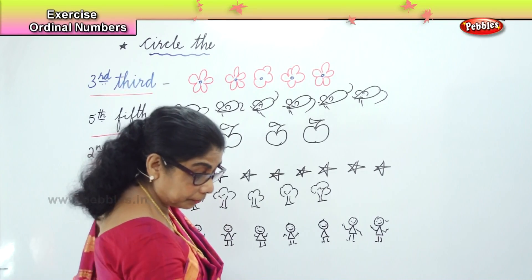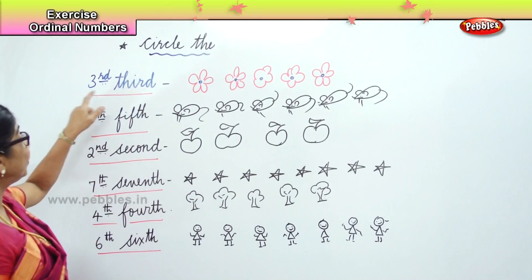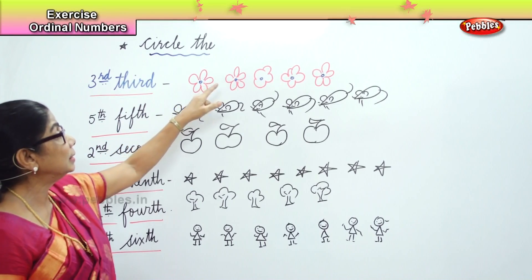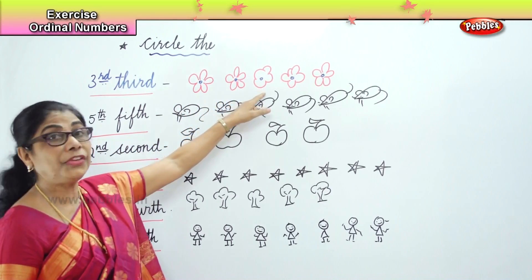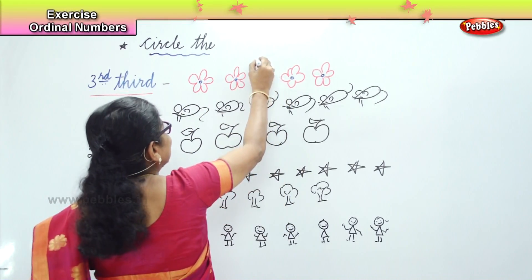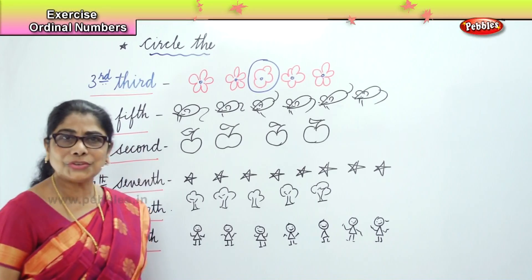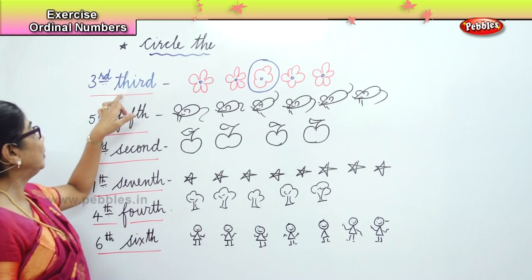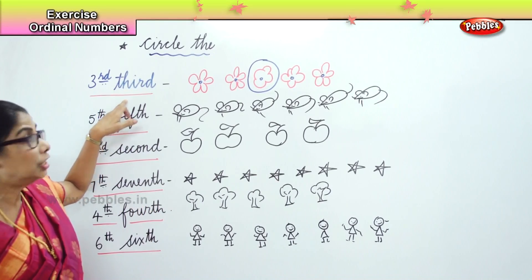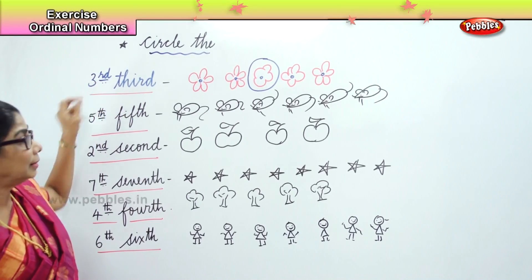First, look at the first row — third flower. First, second, third. What are we going to do? We're going to circle the third flower. Understood? Spell third: T-H-I-R-D. Short form of third: R-D. Third.